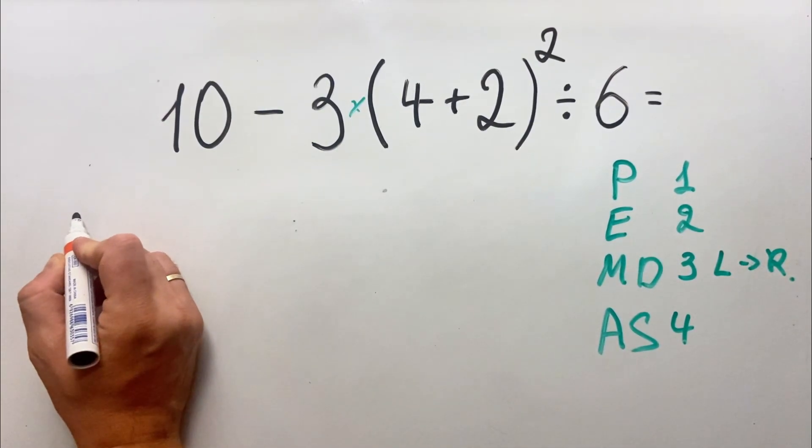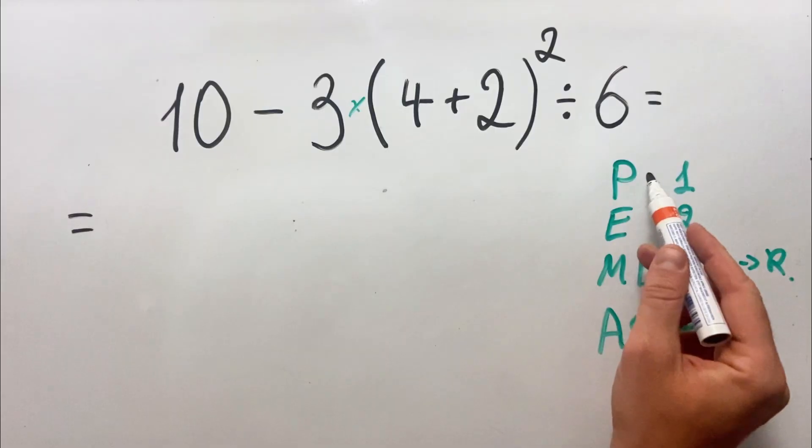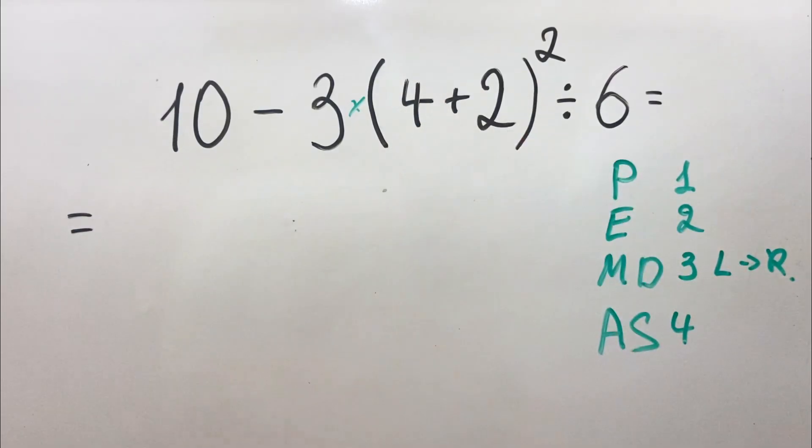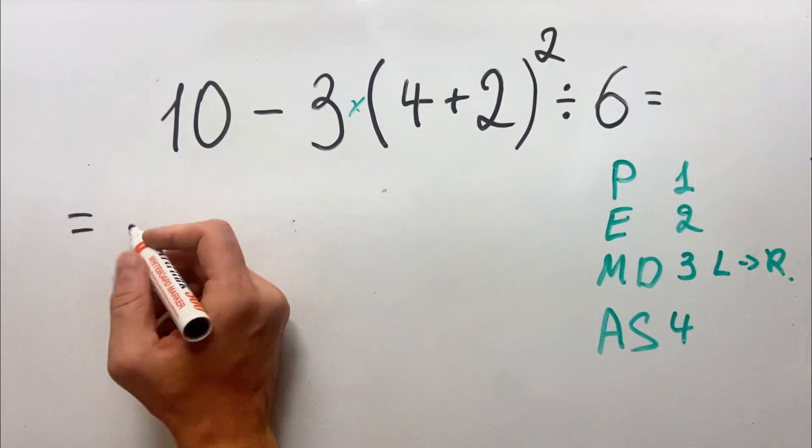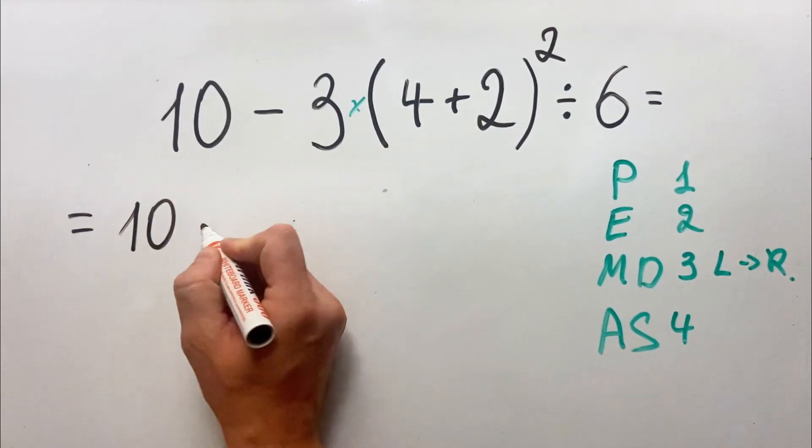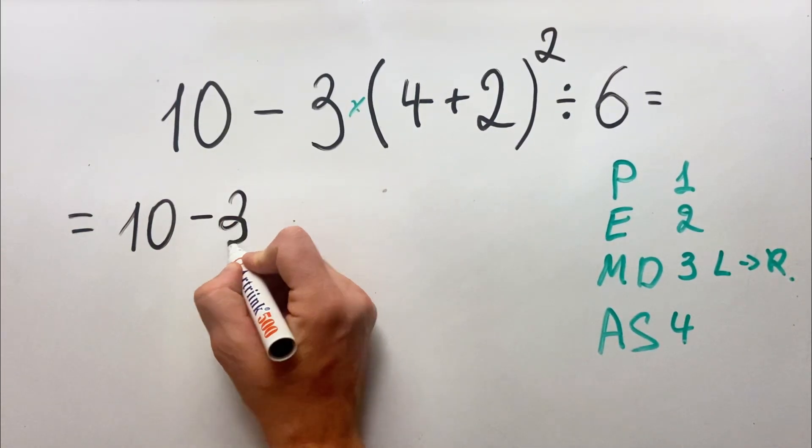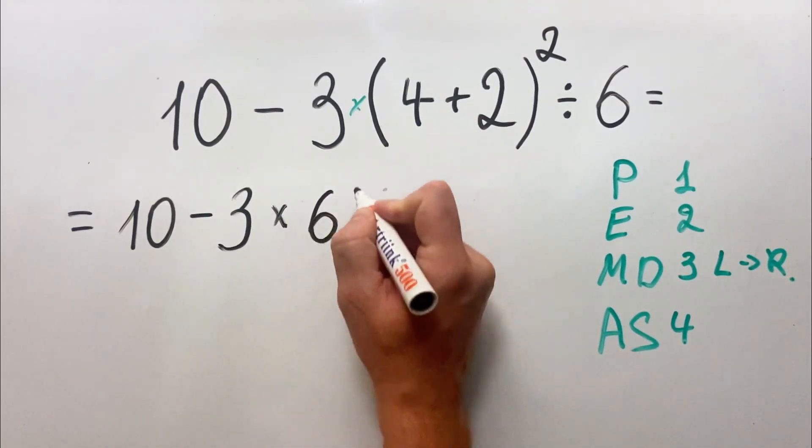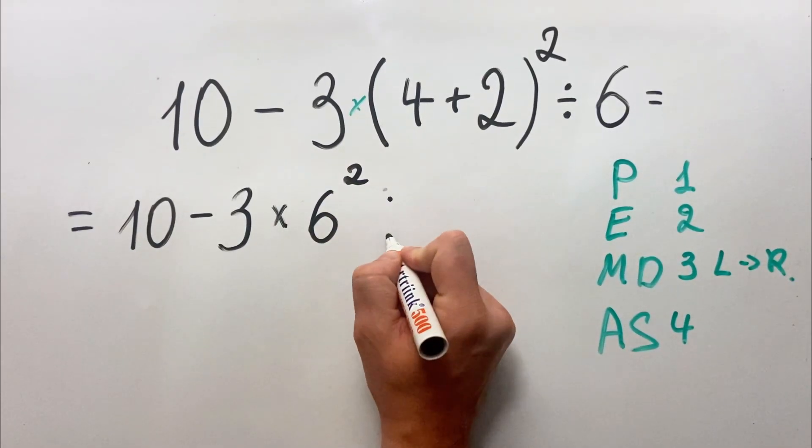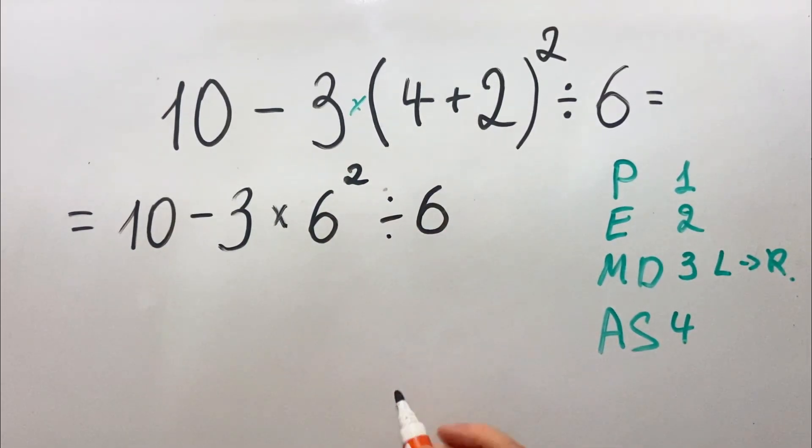Okay, let's start. First we'll do what's inside the parenthesis, so we have 4 plus 2 equals 6. So we get 10 minus 3 multiplied by 6 squared divided by 6. We'll do it in a long way so it's clear for everyone.